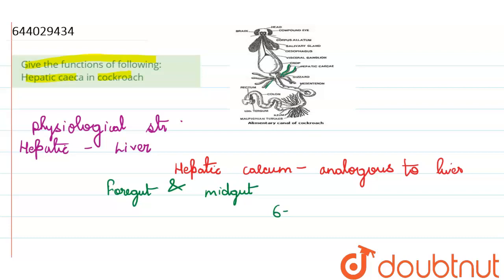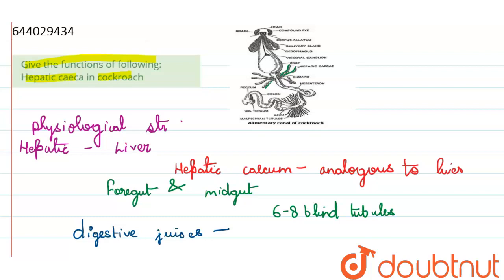This hepatic cecum is a ring of six to eight blind tubules. Coming to their function — as the liver plays an important role in digestion, and they are analogous to liver, their main function is to secrete digestive juices to facilitate digestion. That was about the hepatic cecum in cockroach.